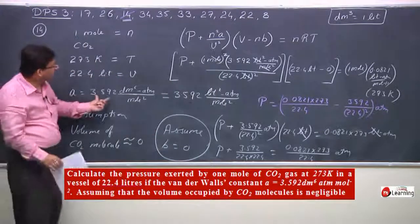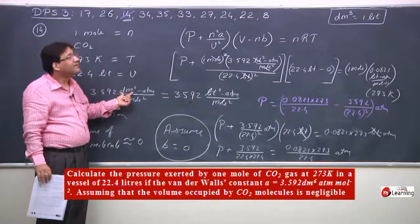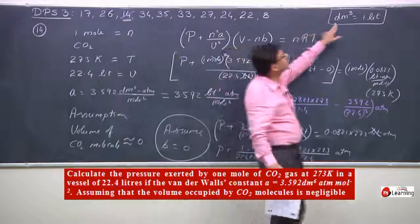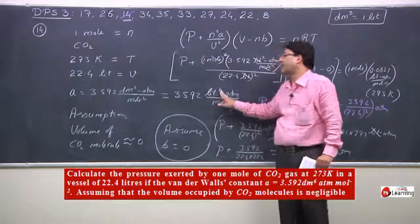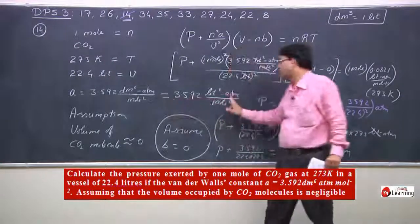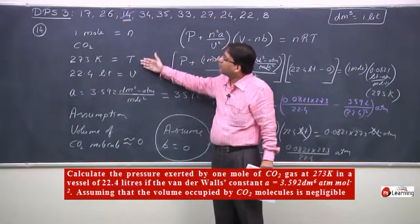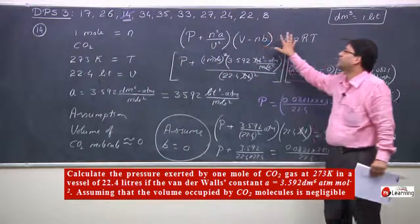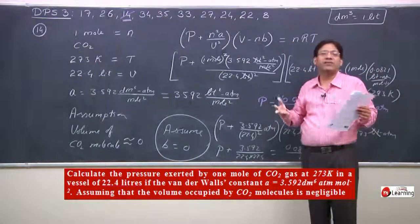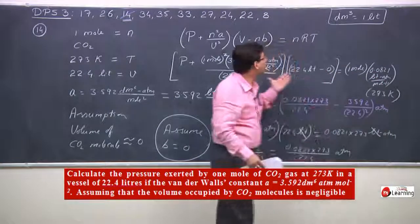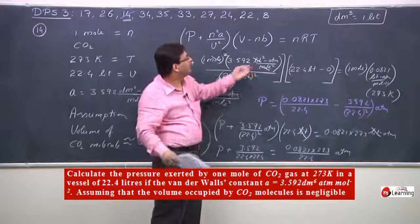In this problem, the key assumption clearly stated is: assume that the volume occupied by CO2 molecule is negligible, meaning assume B = 0. Also note that the unit given — decimeter to the power 6 — is not a new thing: decimeter cubed equals 1 liter, so decimeter to the power 6 equals liter squared. N, temperature, and volume are all given; just substitute into the equation since all units are completely regular, so the answer will automatically come in regular units.